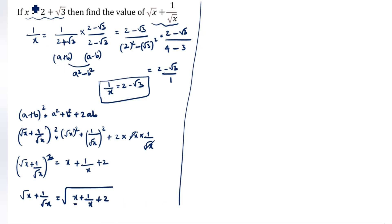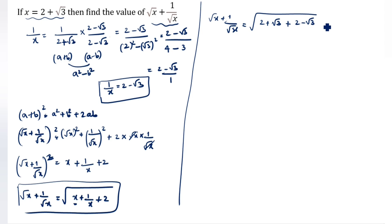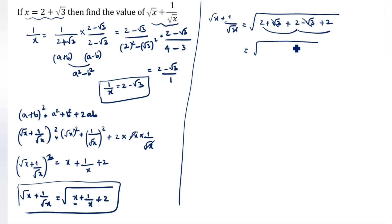We substitute the values. x is 2 plus root 3 and 1 by x is 2 minus root 3. So root x plus 1 by root x equals root of 2 plus root 3 plus 2 minus root 3 plus 2, which equals root of 2 plus 2 plus 2, which equals root of 4 plus 2, equals root 6. Therefore root x plus 1 by root x equals root 6. This is the answer.